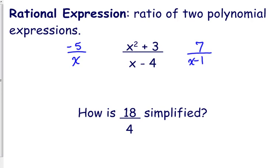First of all, let's establish what a rational expression is. It is the ratio of two polynomial expressions, and I have three different examples there. All three of those are considered rational expressions. You don't have to have a variable in the numerator and the denominator. You do have to at least have it in the denominator. As long as you have a variable in the denominator, you're talking about a rational expression.